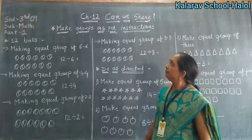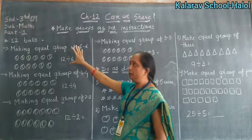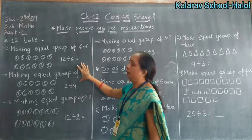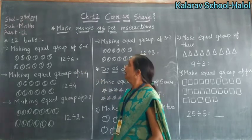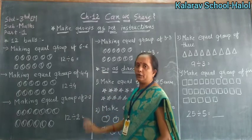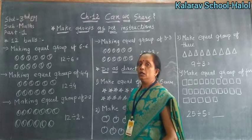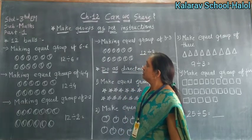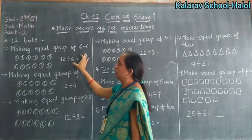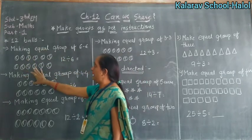So here I have 12 balls. If you make a group like 6-6, or 4-4, or 2-2 — how to make a group? First of all I am making an equal group of 6-6. I have 12 balls.